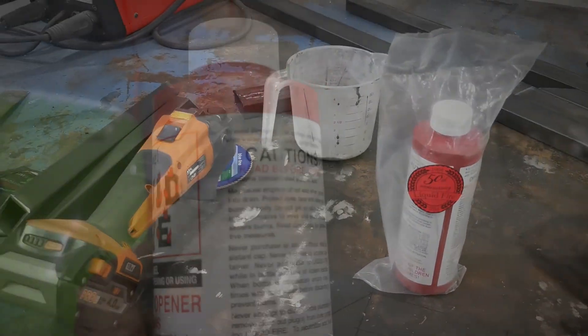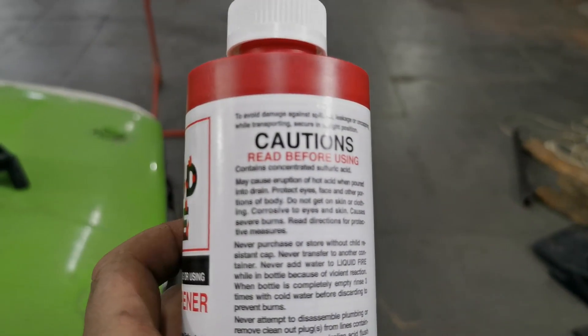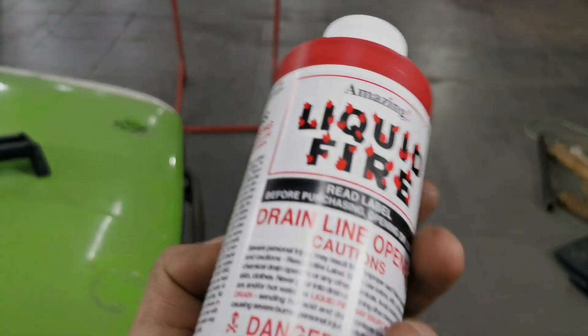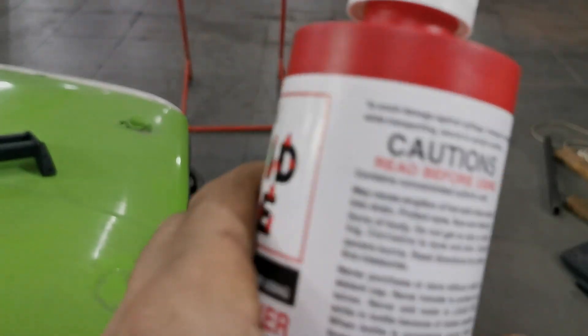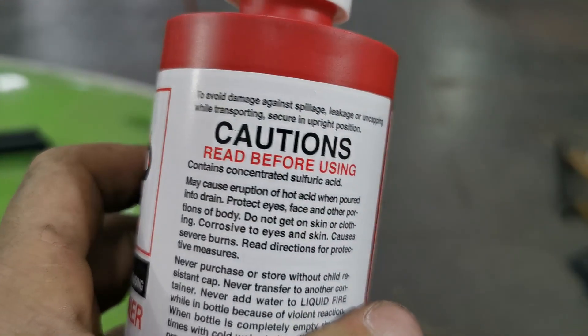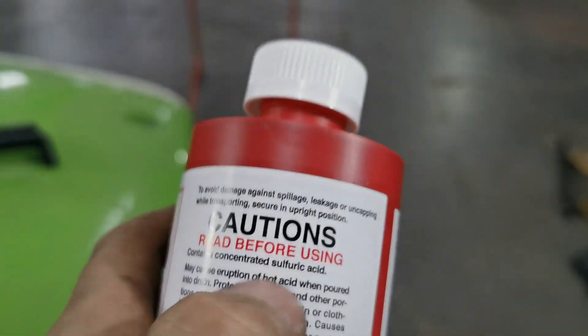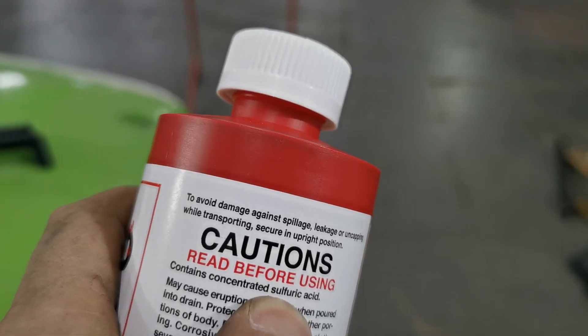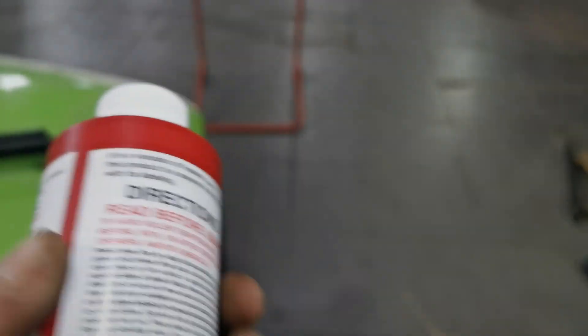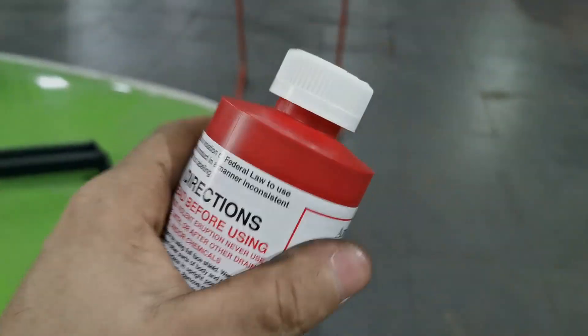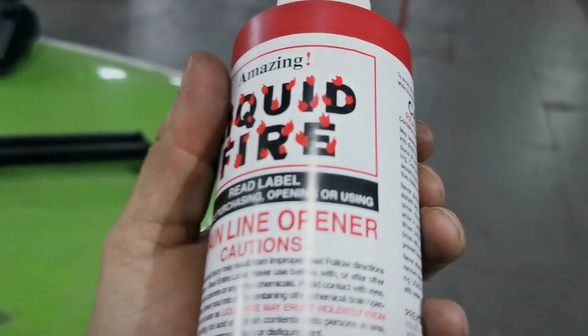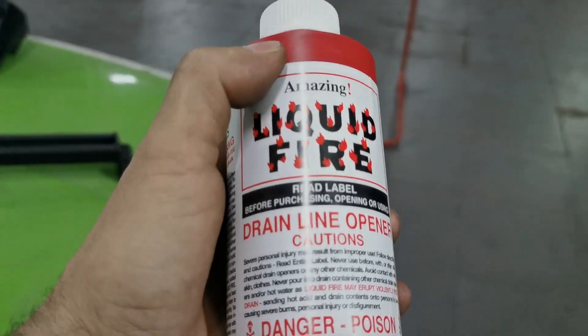Okay, so what we're going to use to clean this up is this one: Liquid Fire drain cleaner. When you get your drain cleaner, make sure it's got the sulfuric acid—you can just see it there. It needs to have that in it. Obviously, you need to be careful messing around with this stuff, so rubber gloves on, eye protection as well.